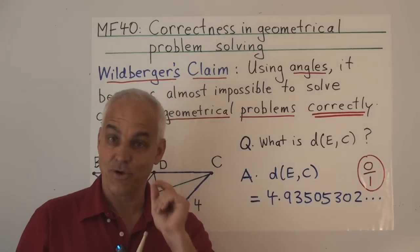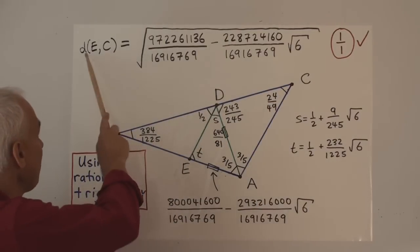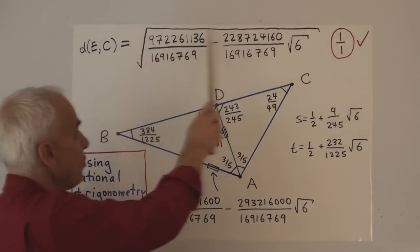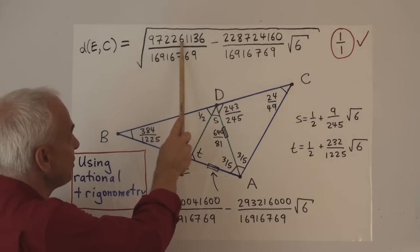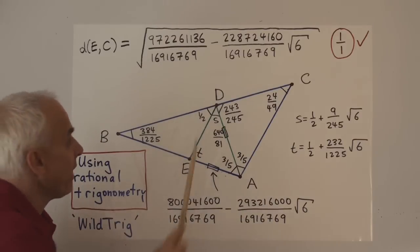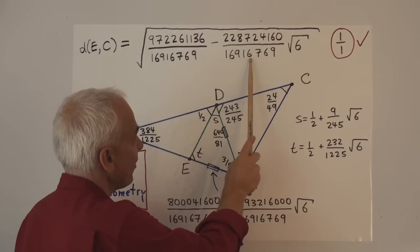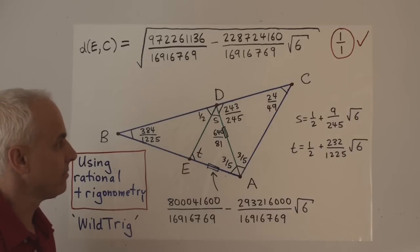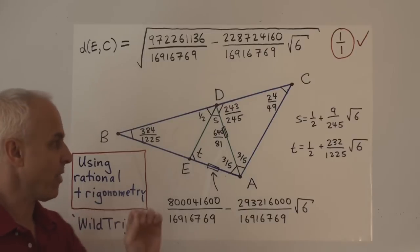So what is the actual correct answer? Here it is: the distance between E and C is the square root of a fraction — numerator 972611360 divided by 16916769 — minus 22872416 divided by 16916769, all of that times the square root of 6. That answer gets one out of one, because it's completely correct.